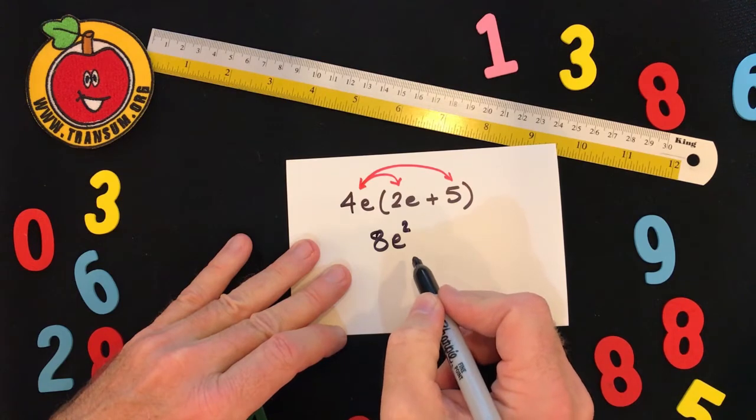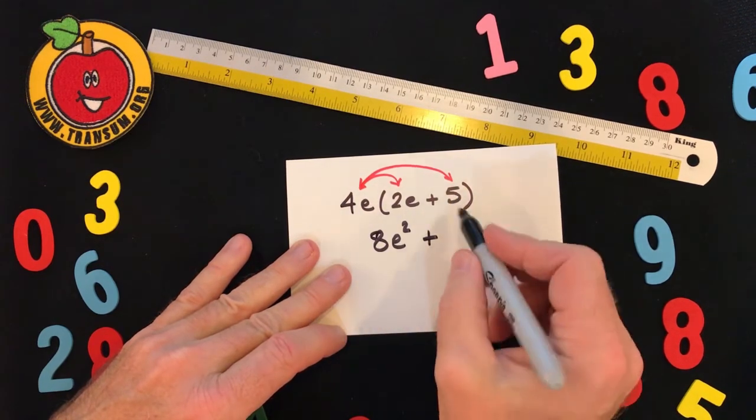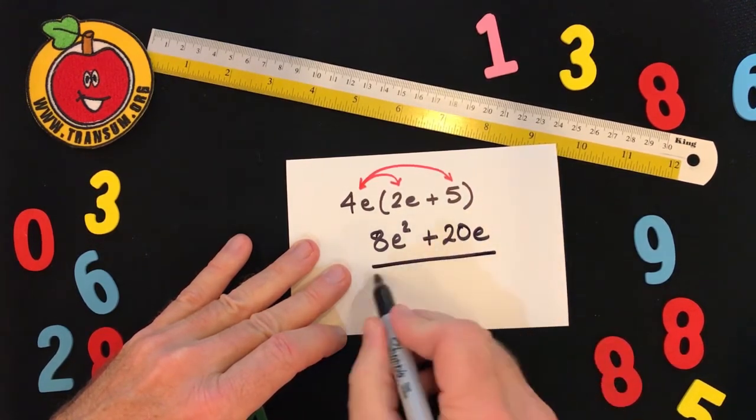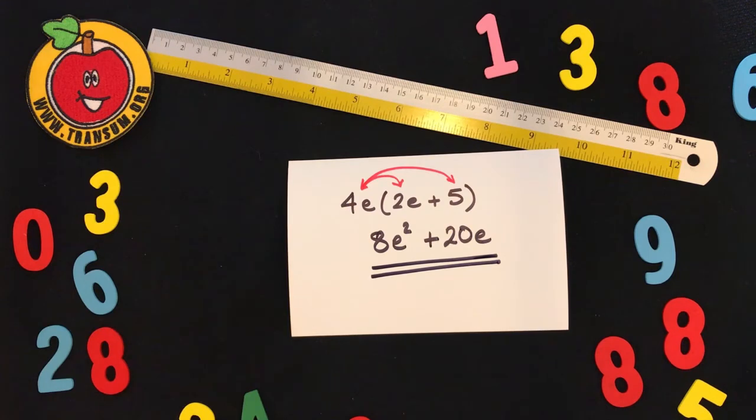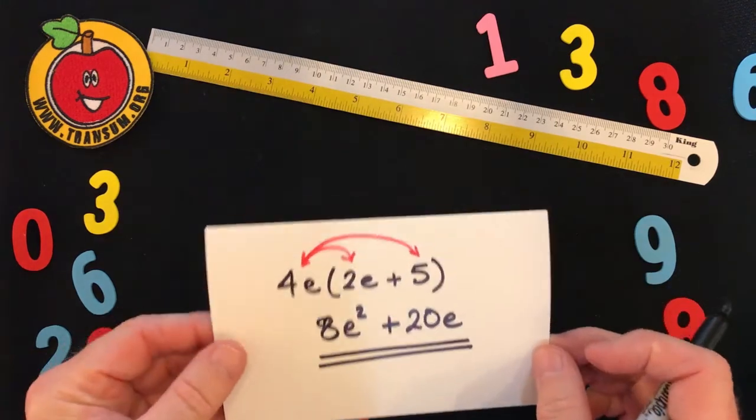So 4e times 2e is 8e squared, plus multiplying the 4e by the 5, we'll get 20e. And that is the answer that you have to type in. There is a little button that you can click to get the squared sign when you're doing it online.